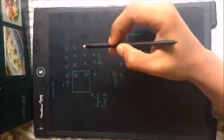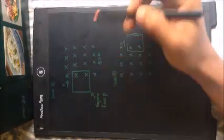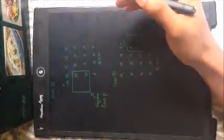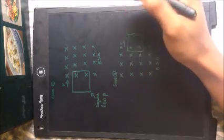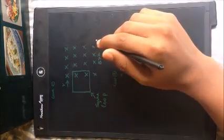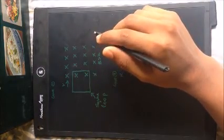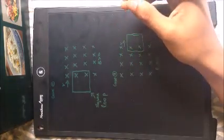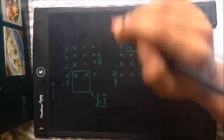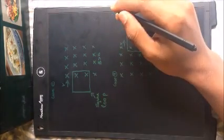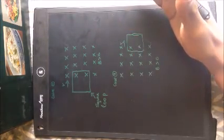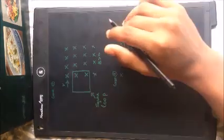Here we are going to find the direction of induced current. According to Faraday's law, the change in magnetic field produces an electric field, and due to that electric field, a current will be induced in this coil. The direction of induced current is governed by Lenz's law.